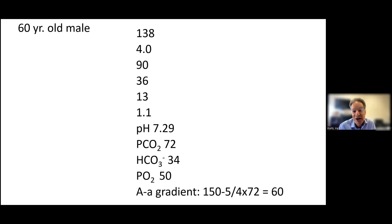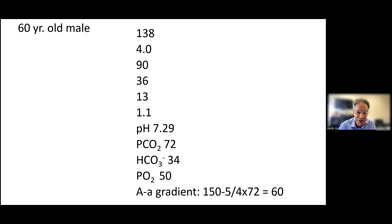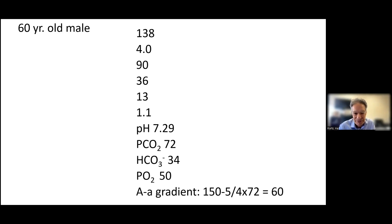Even with a normal A-gradient, if the alveolar PO2 is 100, the maximum arterial PO2 would be around 90. Conversely, if the PCO2 is below 40, the alveolar PO2 will be above 100 — for example, with a PCO2 of 20, the alveolar PO2 would be 125, and arterial PO2 could be 115. Changes in PCO2 also affect the PO2 and you shouldn't separate them conceptually. Get in the habit of always assessing the A-gradient with blood gas information.